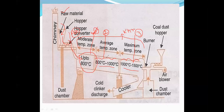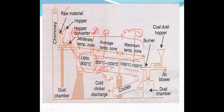Zone two, from 800 to 1000°C, is the calcination zone. The main composition, calcium carbonate (limestone), is heated to about 1000°C. Calcium carbonate is converted to calcium oxide plus carbon dioxide. This conversion of limestone to lime is called calcination.